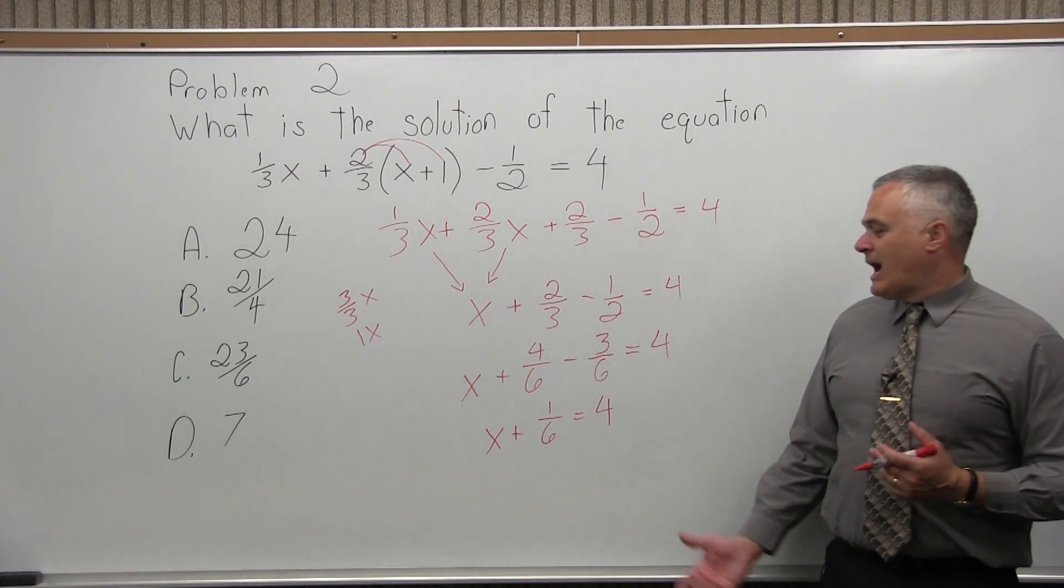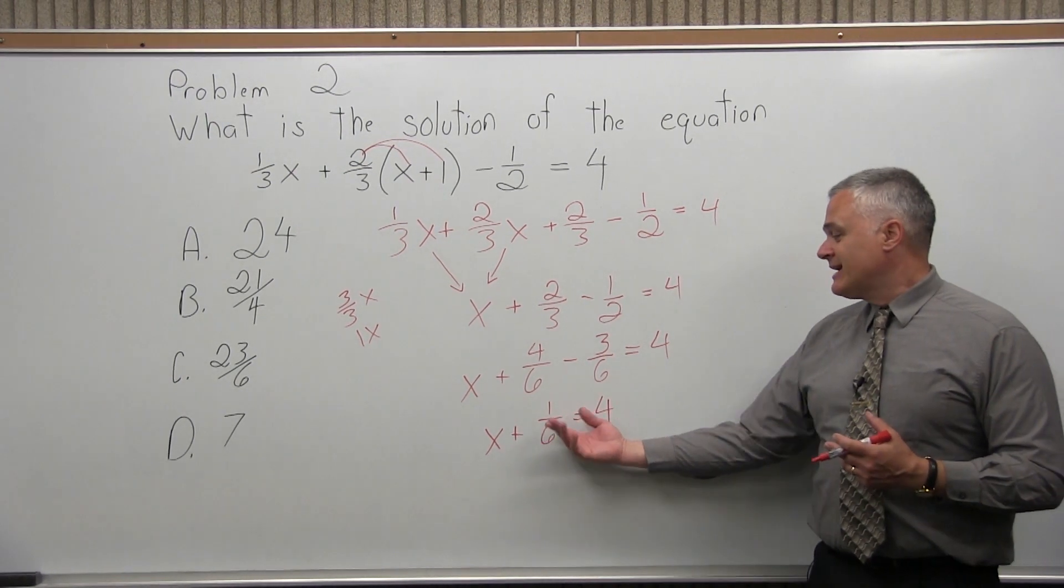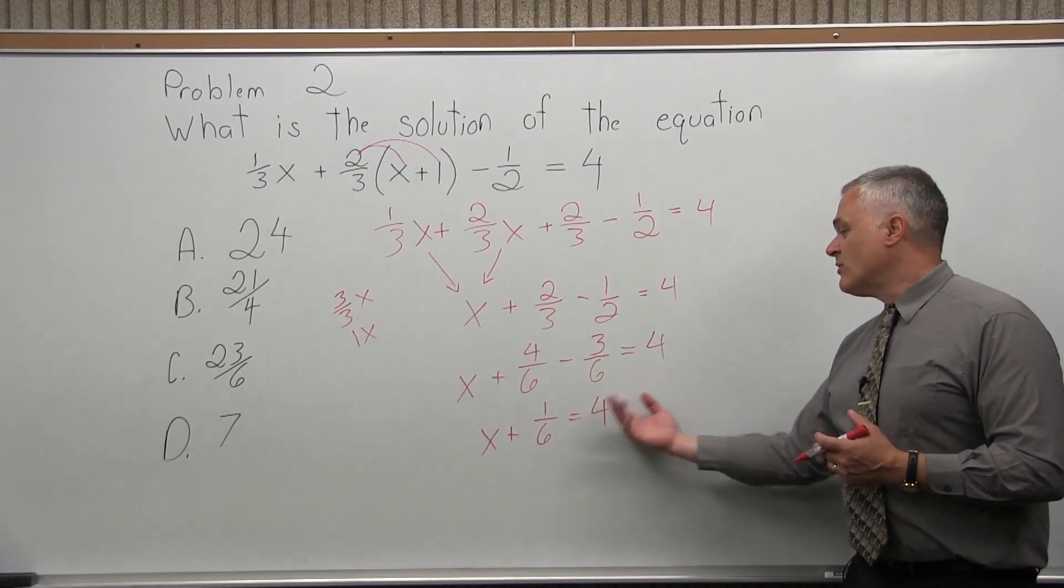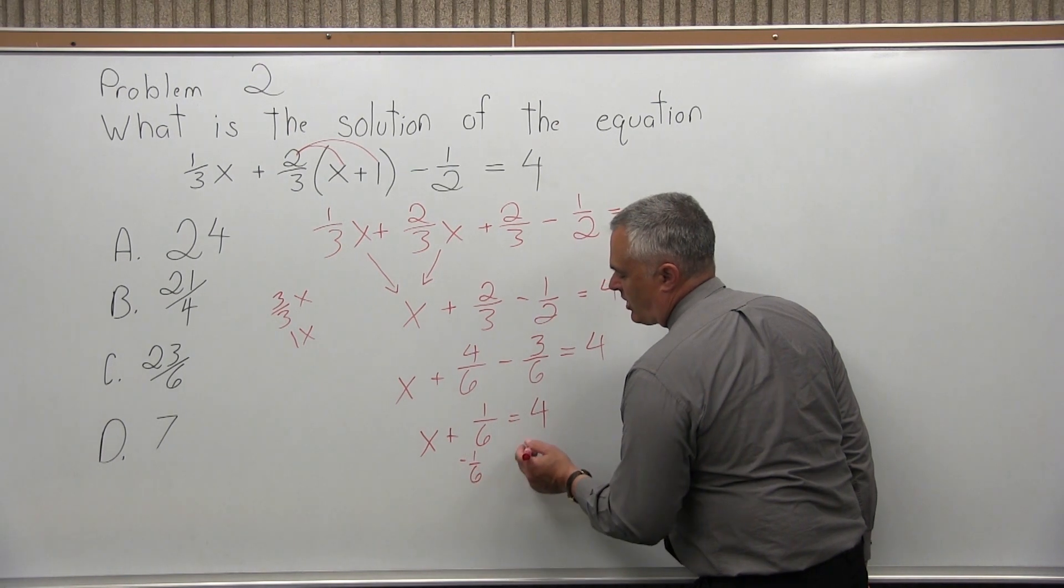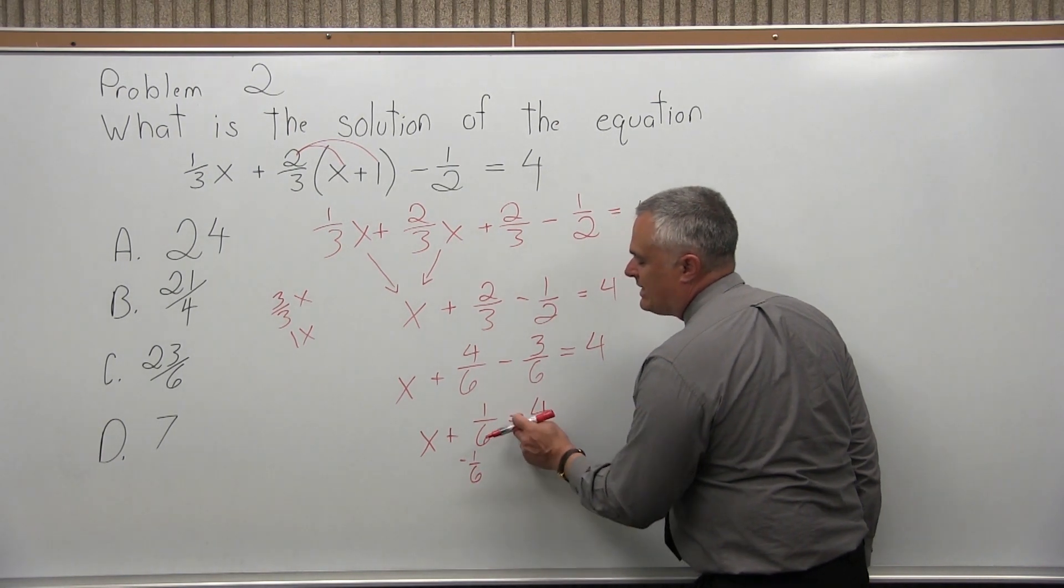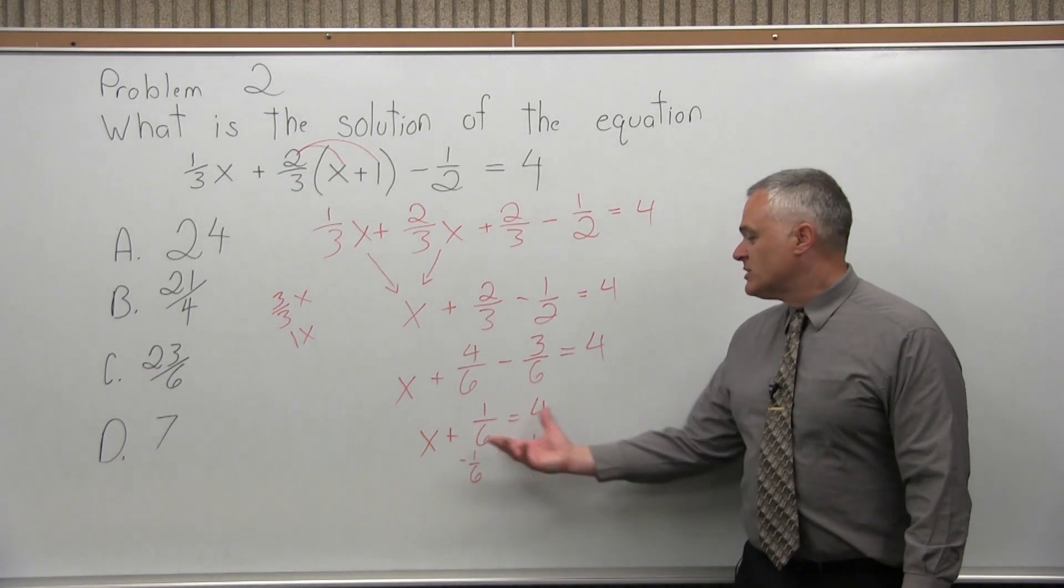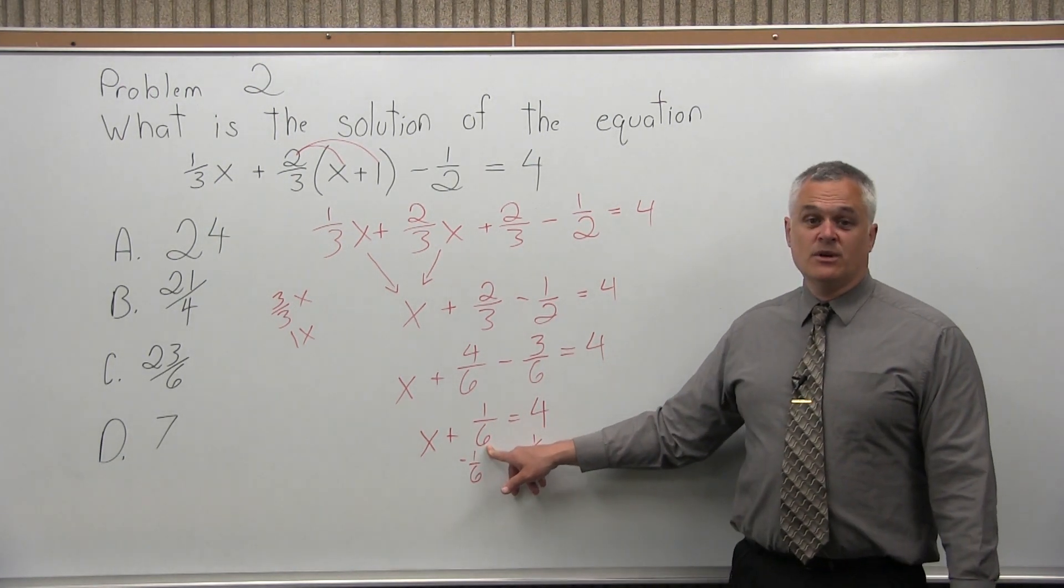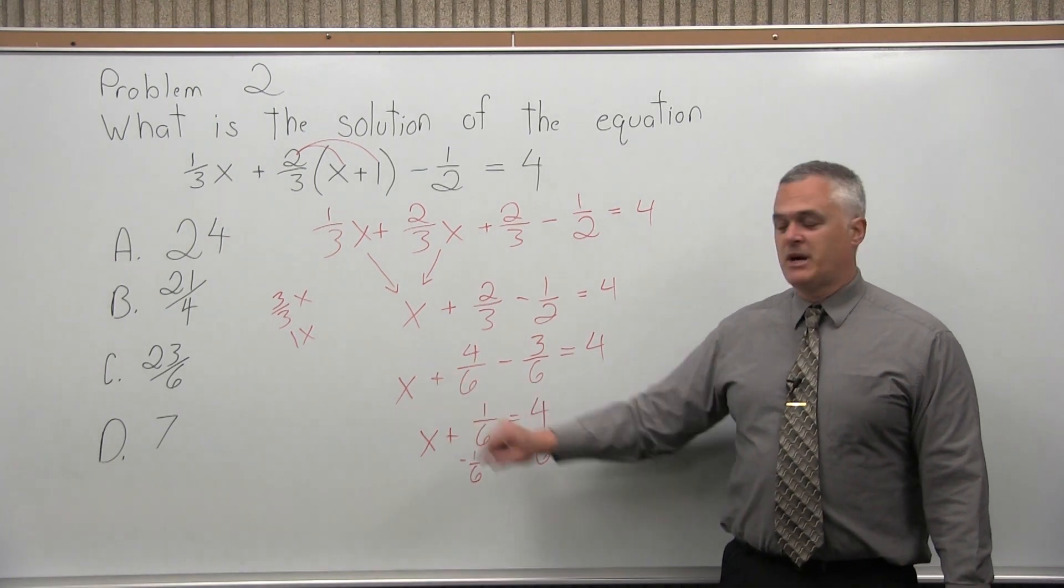Then, next I have equals and then 4. Now, I can subtract these fractions because I have the same denominator. So, the x in front will stay, plus 4 over 6 minus 3 over 6. So, I have 1 over 6 and that equals 4. Now, I want x equals, not x plus 1 over 6. So, I need to get the 1 over 6 to come over to the right side of the equals. Basically, I'm subtracting 1 over 6 on each side of the equals.